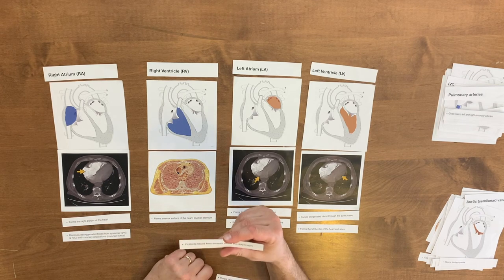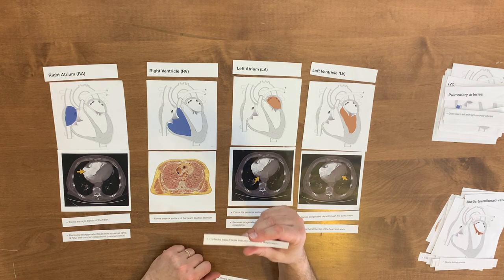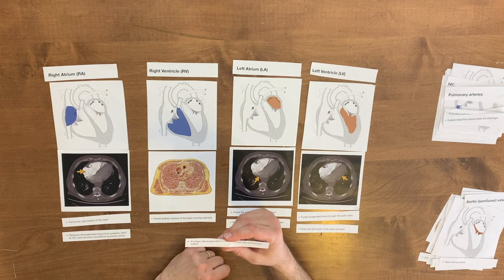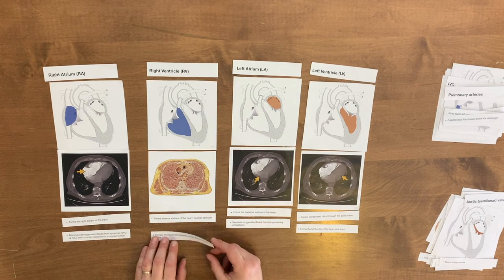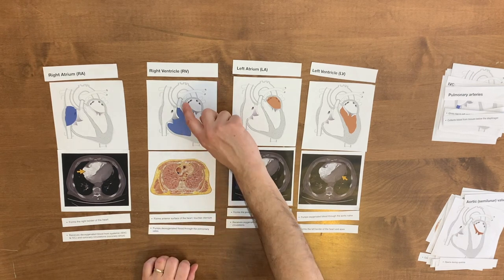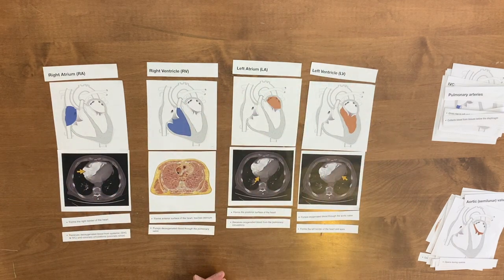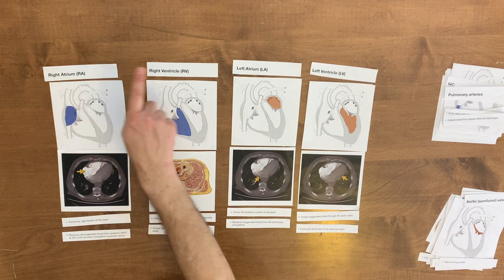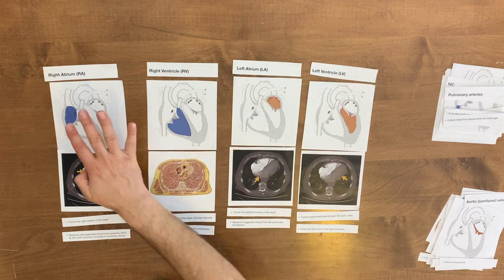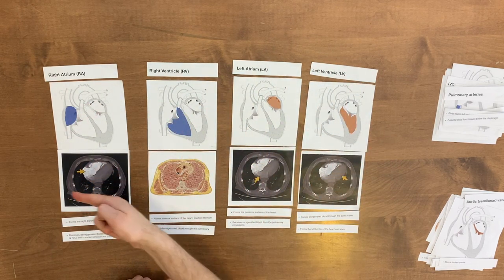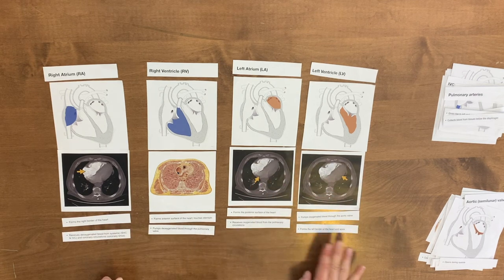'Receives deoxygenated blood from the superior and inferior vena cava and coronary circulation' — that's also the right atrium from the superior and inferior vena cava and the coronary artery. 'Forms the left border of the heart and apex' — that's our left ventricle. 'Pumps deoxygenated blood through the pulmonary valve' — deoxygenated blood through the pulmonary valve into the pulmonary artery. So we now have our four chambers of the heart by name, abbreviation RA, RV, LA, LV, by illustration with color coding, through axial imaging, and through definitions.